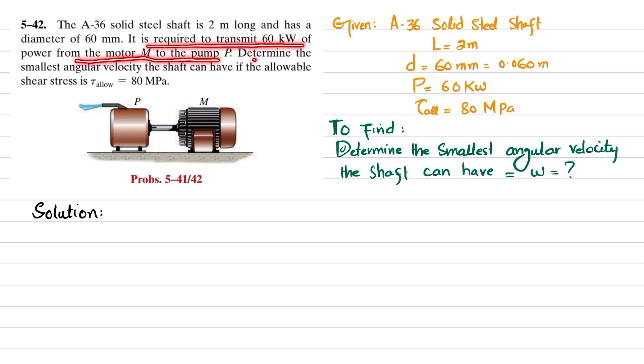Determine the smallest angular velocity the shaft can have if the allowable shear stress is 80 megapascals. So this is motor M which is transmitting power to this pump through this solid shaft.